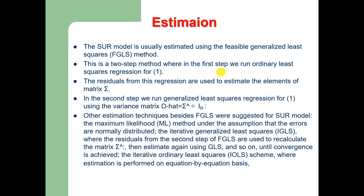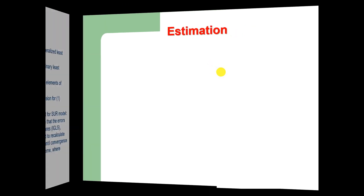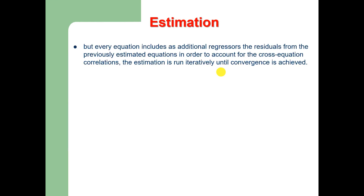Other estimation techniques besides FGLS include: the maximum likelihood method under the assumption that errors are normally distributed; the iterative generalized least squares (IGLS), where the residuals from the second step of FGLS are used to recalculate sigma-hat, then estimate again using GLS until convergence is achieved; and the iterative ordinary least squares (IOLS) scheme, where estimation is performed equation by equation but every equation includes additional regressors — the residuals from the previously estimated equation — to account for cross-equation correlations.